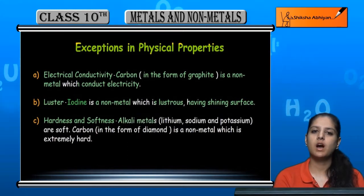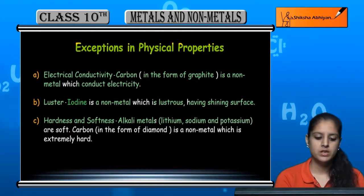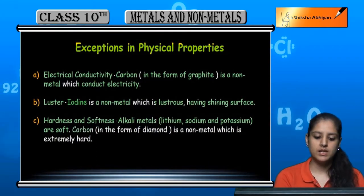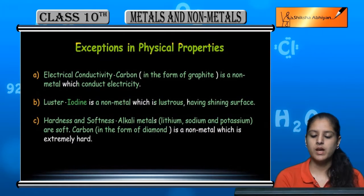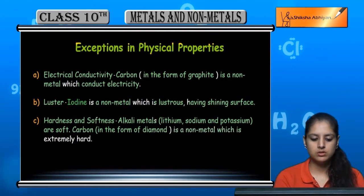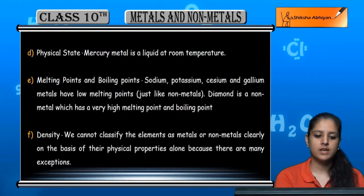Now hardness and softness: metals are generally hard, but some alkali metals like lithium, sodium, and potassium are soft. Non-metals are also soft, but there is one non-metal — carbon in the form of diamond — which is very hard, making it an exception.